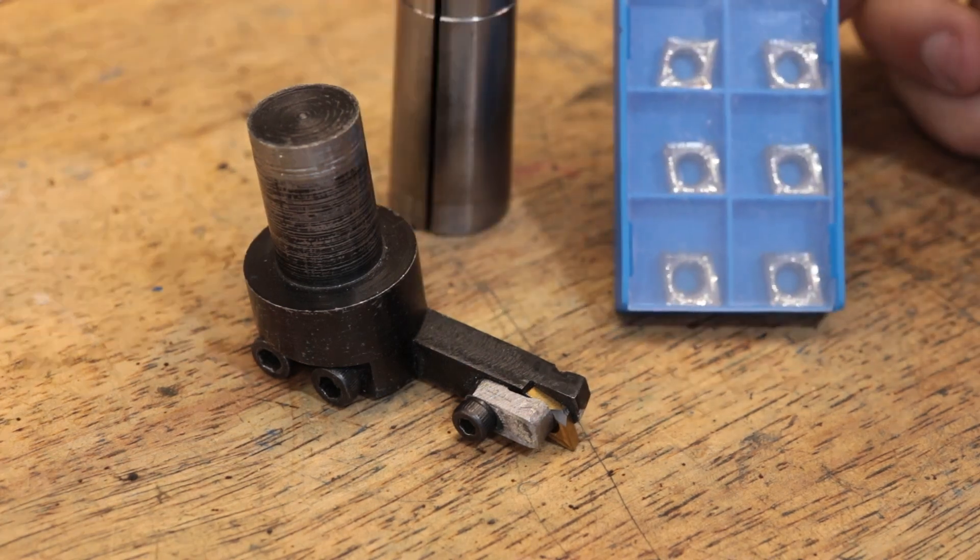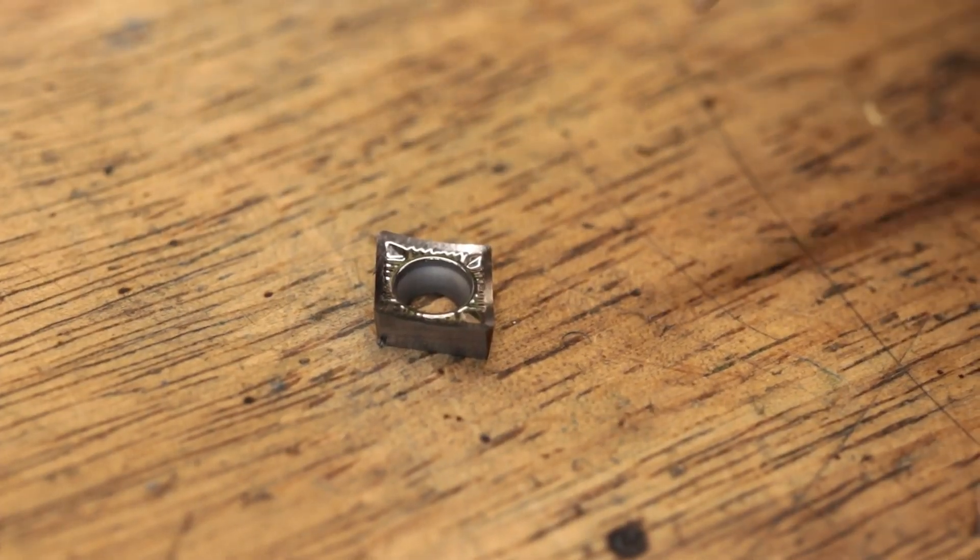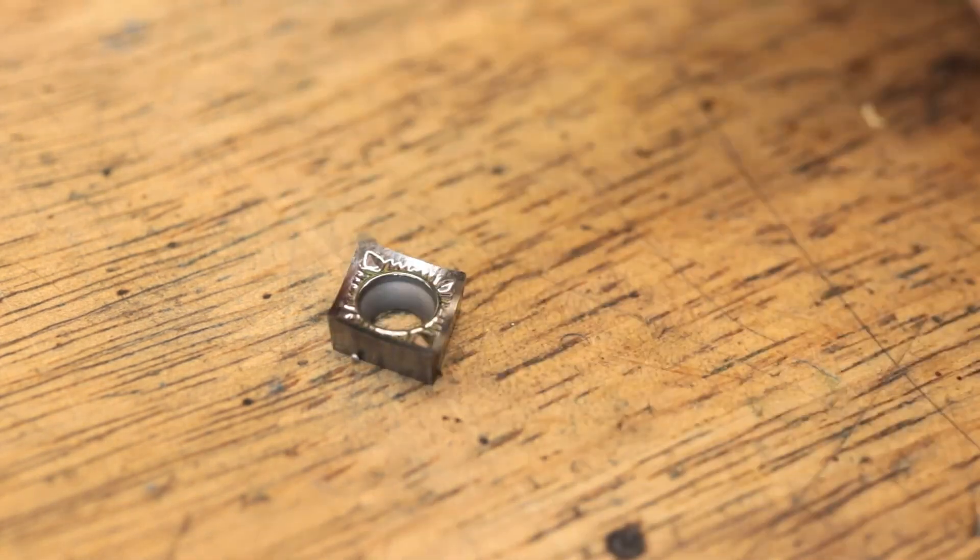I also have a new packet of inserts that I'd like to try out. These are CCGT inserts and they're made for cutting aluminum, though that doesn't stop me from using them to cut steel.